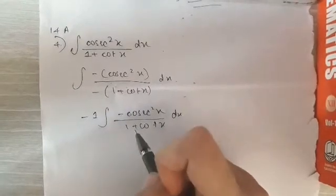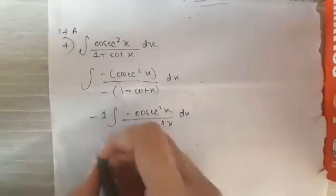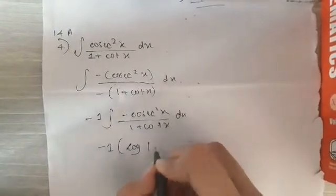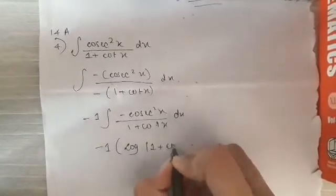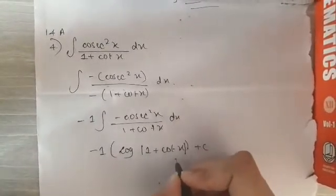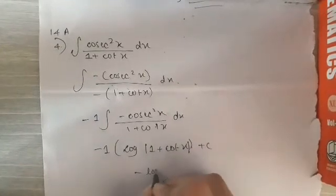can write the denominator as log of the denominator. So we have -1 times log(1 + cot x) plus C. And we know that we need a mod sign in the log, so the final answer is -log